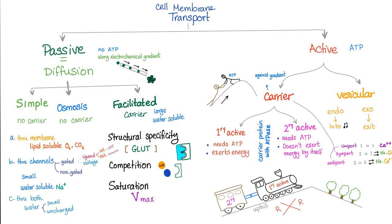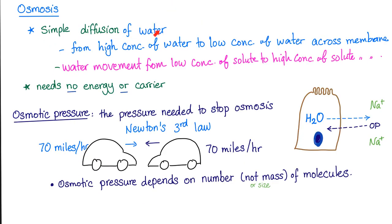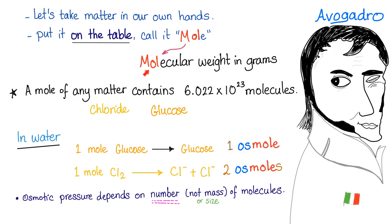We will do this very quickly because we've discussed this before in my physiology playlist. Cell membrane transport, either passive or active. Passive includes osmosis, which means we need no ATP, we need no carrier. Osmosis is the simple diffusion of water, or the movement of water from low concentration of solute to high concentration of solutes. What is a mole? It's a molecular weight in grams. What's a millimole? Same thing, just smaller than the mole. How about the osmol? This is osmolality caused by a mole.